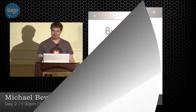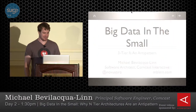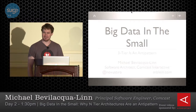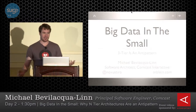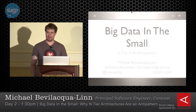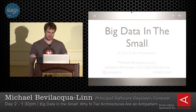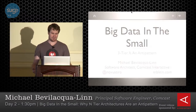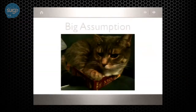My name is Michael Bevilacqua-Linn, and I'm a software architect with Comcast Interactive Media. We do all of Comcast's online and mobile stuff. What that means is we produce a fairly high-volume website and a bunch of APIs that power that website and mobile apps.